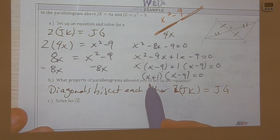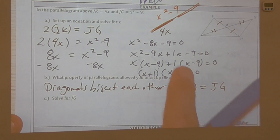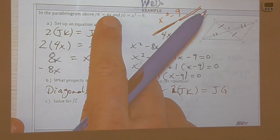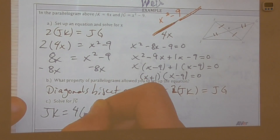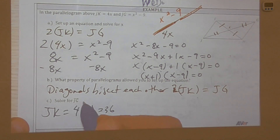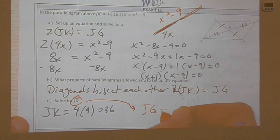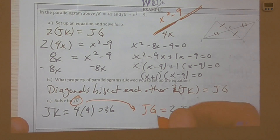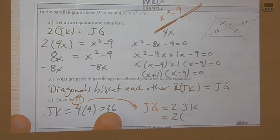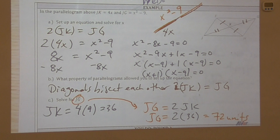So x equals negative 1 or x equals 9. Since 4x must be positive, x must be positive, so x equals 9. Therefore JK equals 4 times 9, which is 36. Since JG equals 2 times JK, JG equals 2 times 36, which is 72 units. We've now looked at all the key features of a parallelogram.